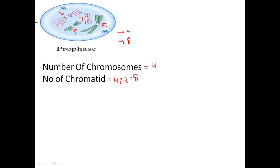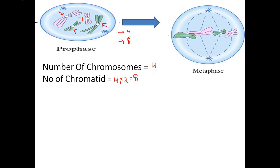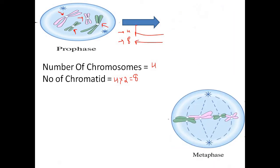In the next phase — metaphase — the chromosomes align themselves along the cell plate. The number of chromosomes and chromatids does not change in metaphase. So in metaphase, the number of chromosomes is still four and the number of chromatids is still eight.